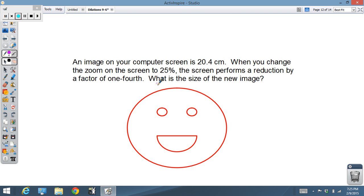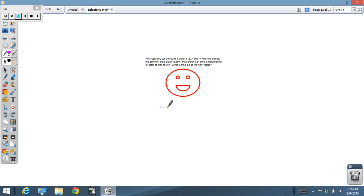Final kind of problem. The image on your screen is 20.4 centimeters. You change the zoom on your screen to 25%. This means the screen is going to reduce by a factor of one-fourth. What's the size of the new image? Well, if the original is 20.4, our new image is one-fourth of that, 5.1 centimeters. Make sense? Hope it's all good.